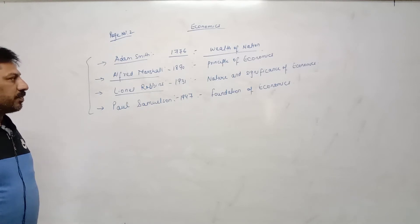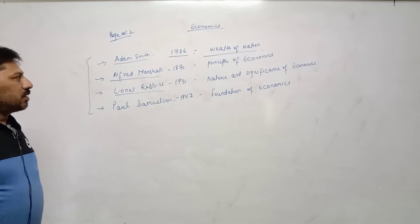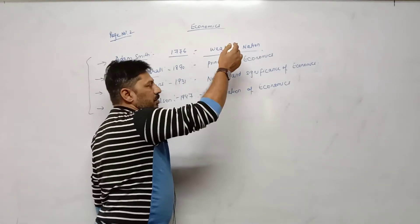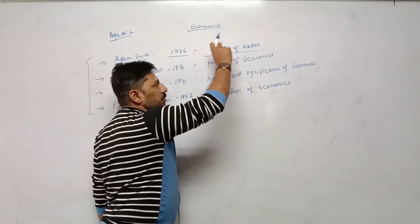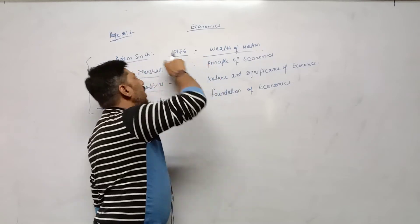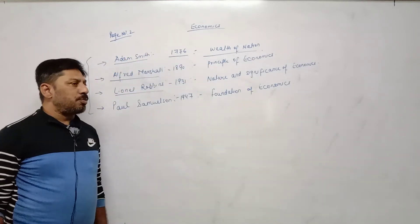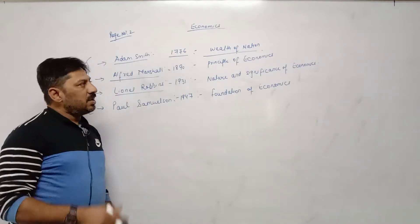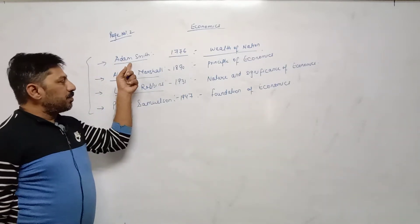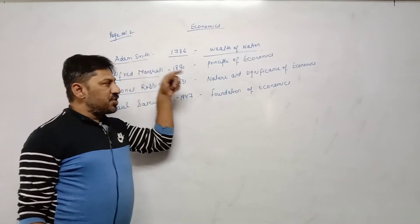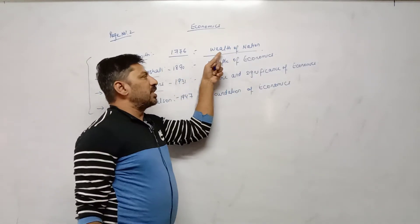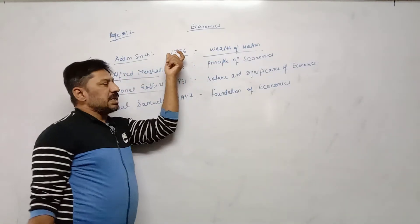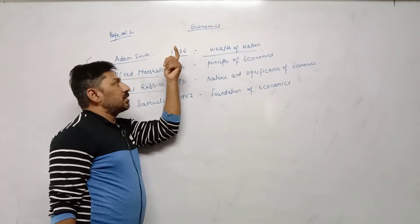MCQ questions may come like: who gave the concept of Wealth of Nations? Answer: Adam Smith. In which year was the book published? 1776. Or, Adam Smith published a book — what is its name and year? Wealth of Nations, 1776.